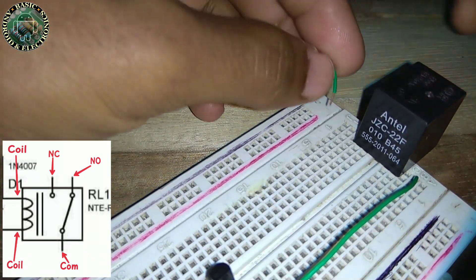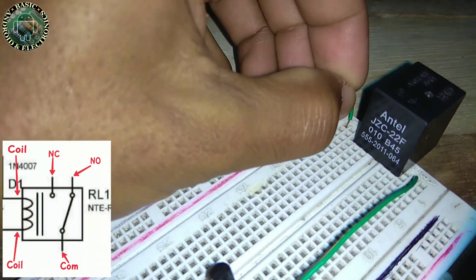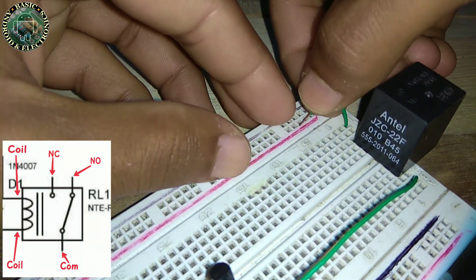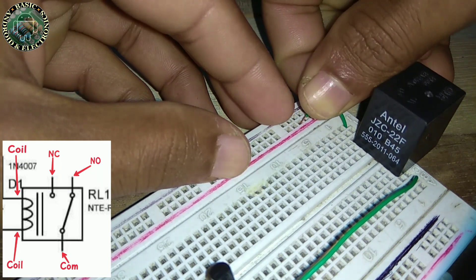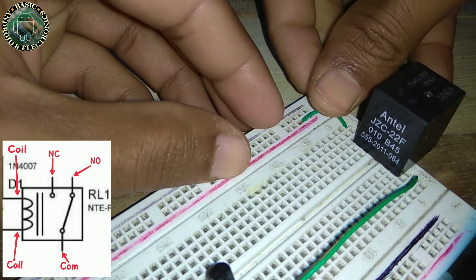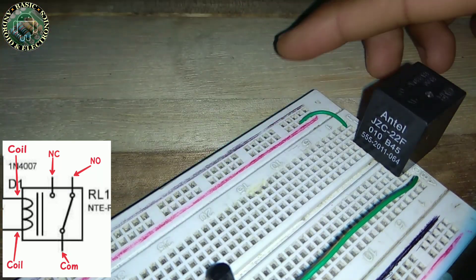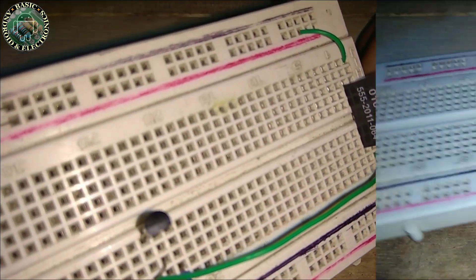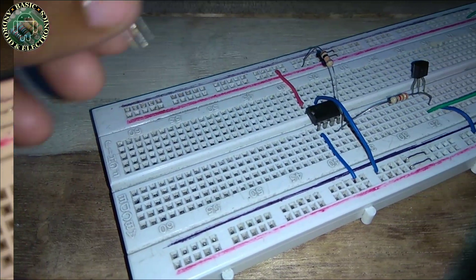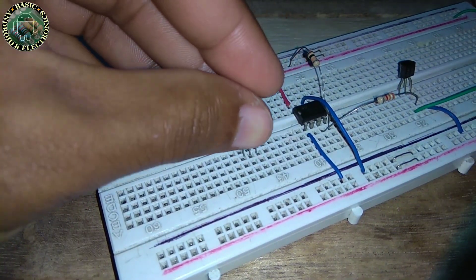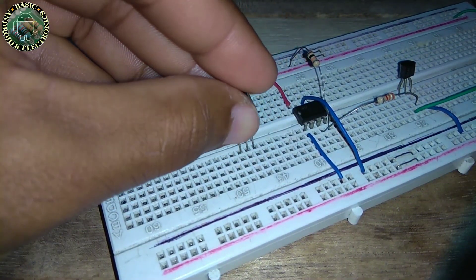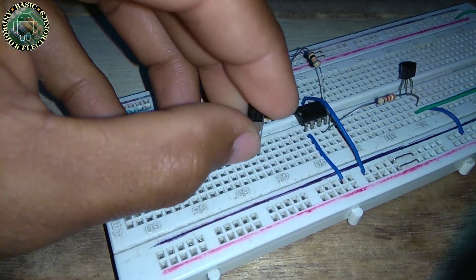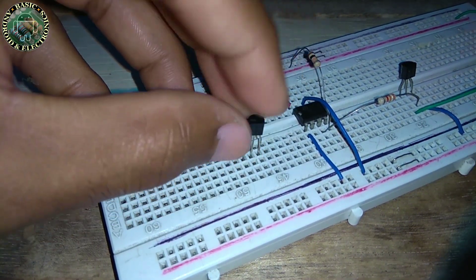Connect another coil terminal of this relay switch to the positive rail of the breadboard. Now insert another BC547 transistor on the breadboard.